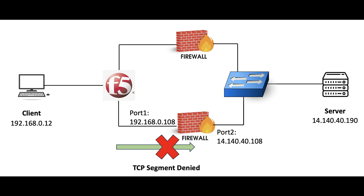To overcome this situation, we are going to enable asymmetric routing for TCP on firewall 2 so that it can allow the traffic even if the TCP three-way handshake did not happen through that particular firewall, which is firewall 2.